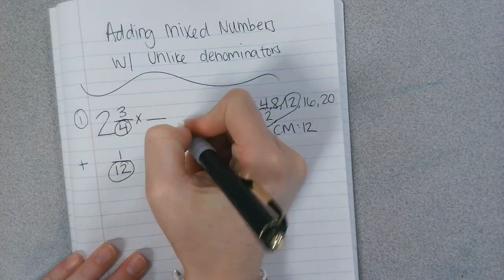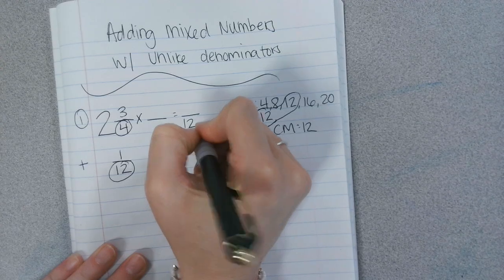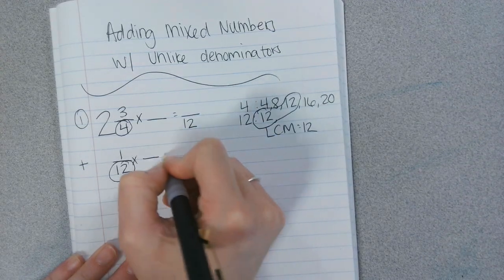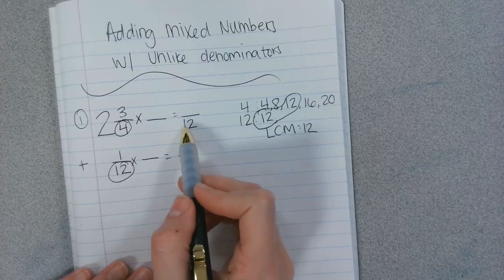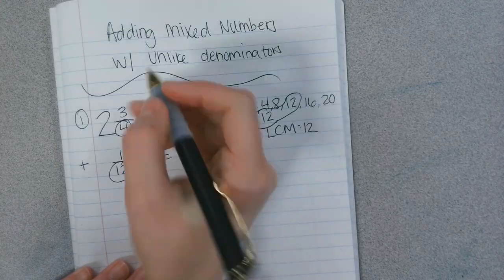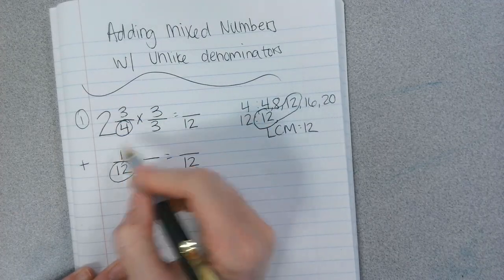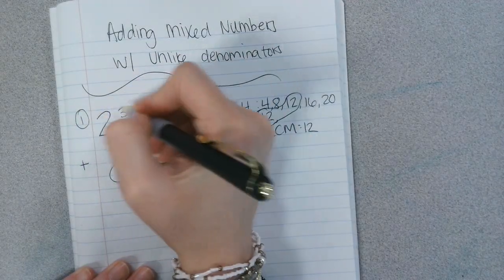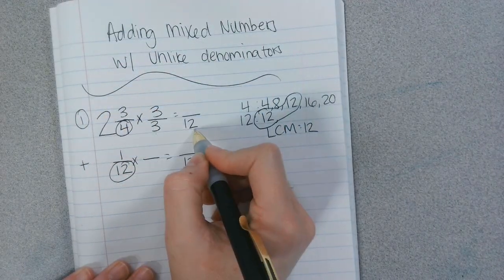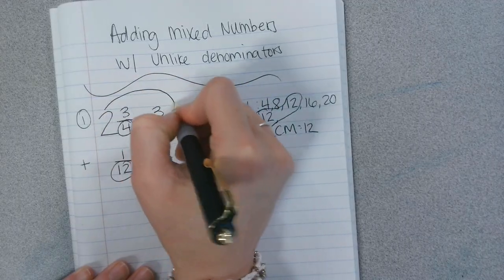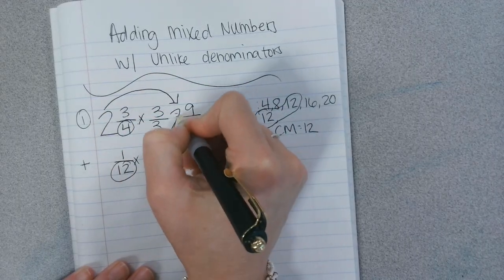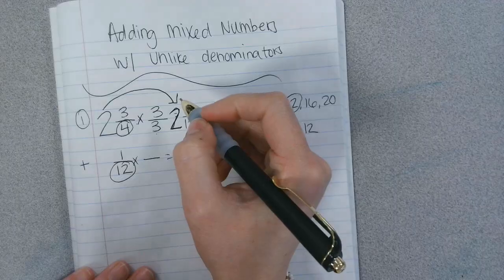So I rewrite these fractions with a denominator of 12. Okay, 4 times what gives us 12? 3, so I multiply the entire fraction by 3 thirds. That 2 will stay the same. So 4 times 3 is 12, 3 times 3 is 9. But that 2, I cannot forget that 2, because that's 2 wholes.